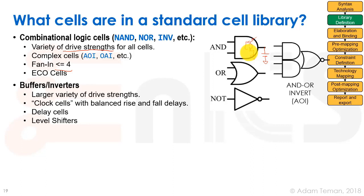Next are buffers and inverters, which are special cells. We have many sizes of them — used as repeaters to drive large loads. There are also clock cells, which have balanced rise and fall delays to minimize skew when building the clock tree. Delay cells are cells with intentionally poor propagation delay, often used for hold fixing. Level shifters are buffers that allow communication between multiple supply voltage domains.